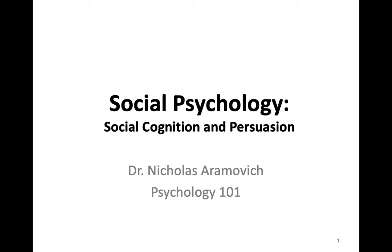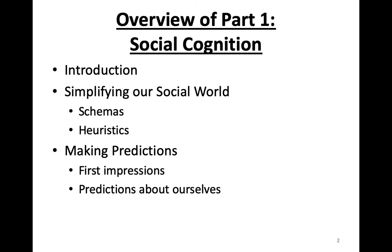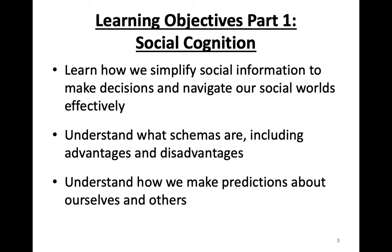This lecture is the first lecture on social psychology where I'm going to review social cognition and persuasion. The first part of the lecture is going to be social cognition and the second part will be persuasion. Social cognition is the area of social psychology that examines how people perceive and think about their social world. I'll divide it into schemas and heuristics as well as making predictions. From this first part, I hope you'll learn how we simplify social information to make decisions, understand what schemas are including their advantages and disadvantages, and understand how we make predictions about ourselves and other people.